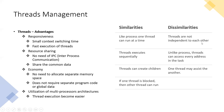Unlike processes, threads are not independent of each other — processes are independent of each other. Unlike a process, threads can access every address in the task. Because threads belong to one process and share the same memory address space, multiple threads under one process can access that shared memory. One thread may assist another thread.